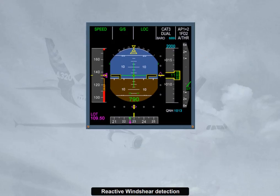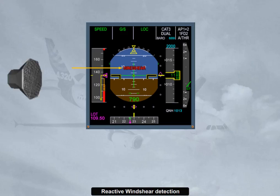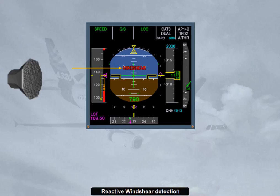If the aircraft encounters wind shear conditions detected by the FAC, a red wind shear message is triggered for a minimum of 15 seconds on both PFDs, associated with an aural warning: wind shear, wind shear, wind shear. This reactive wind shear warning is available from 3 seconds after lift-off up to 1300 feet at take-off, and from 1300 feet down to 50 feet during landing, and with at least CONF1 selected.